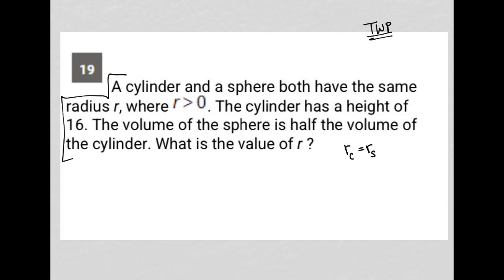The cylinder has a height of 16. So I'm going to say H_C, or height of cylinder, is equal to 16. The volume of the sphere is half the volume of the cylinder, which means V_S, volume sphere, is equal to one-half V_C, half of the volume of the cylinder.